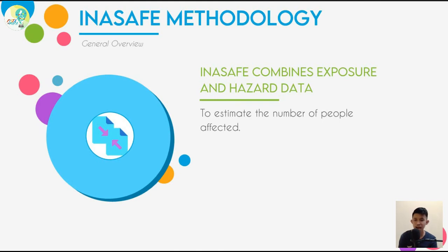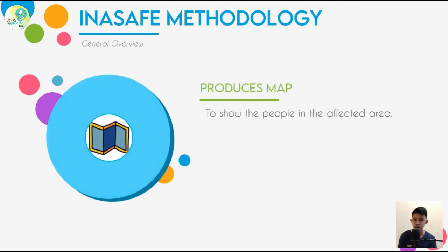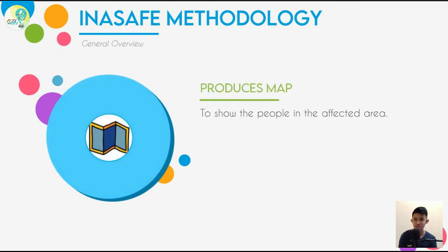Unfortunately, I wasn't able to incorporate the minimum needs data on the map. InaSAFE produces a map to show the people in the affected area, but in this case I created my own template to better show the impact of the storm surge on the population by incorporating the analysis results on the map.